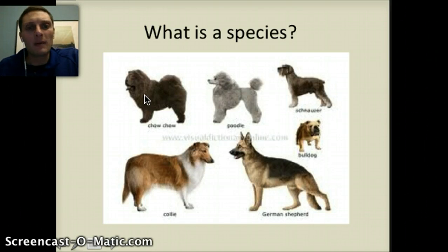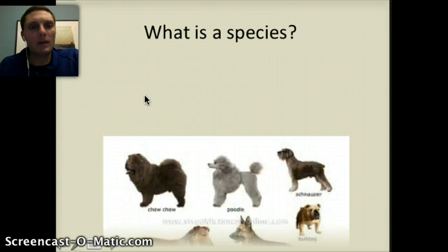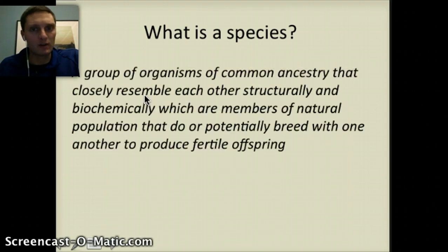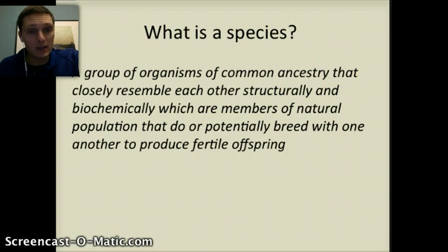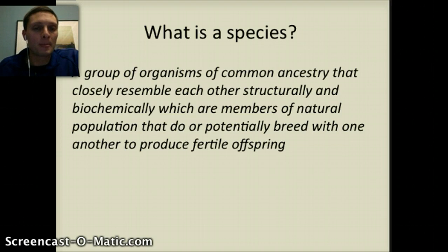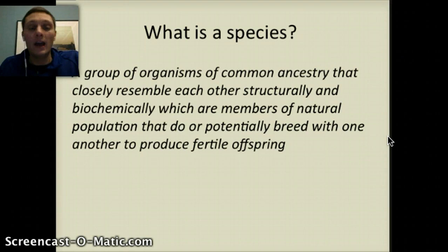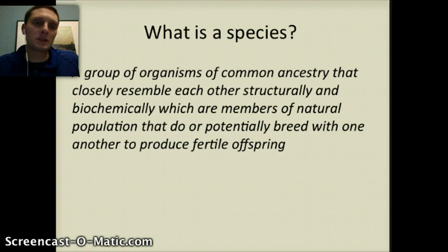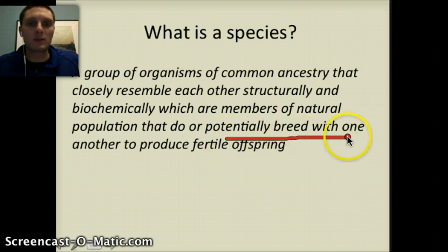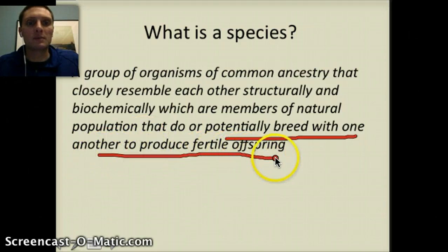We're going to come back to this example of dogs, but what makes a species? A good definition is: a group of organisms of common ancestry that closely resemble each other structurally and biochemically — referring to their DNA — and which are members of a natural population that do or potentially breed with one another to produce fertile offspring. The portion we want to focus on is 'produce fertile offspring,' and this is really important.